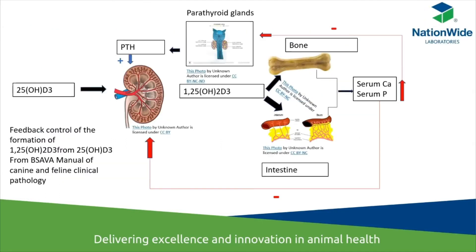This diagram illustrates the negative feedback in a normal animal with a functioning parathyroid gland. Increased calcium and phosphorus exerts negative feedback on the parathyroid gland, resulting in decreased parathyroid hormone production. Calcium and phosphorus also negatively feedback on the kidneys, reducing activation of vitamin D3, which itself acts on bone, intestines, and kidneys.